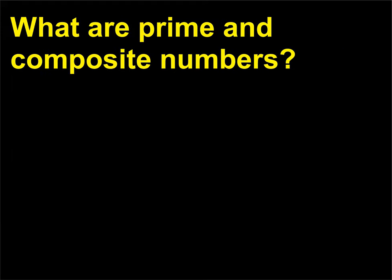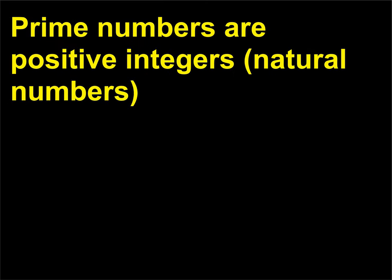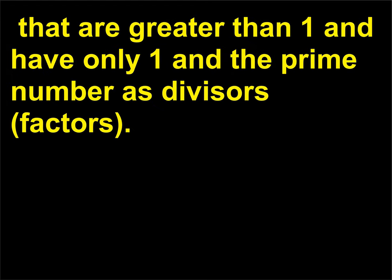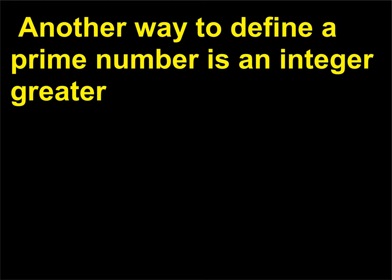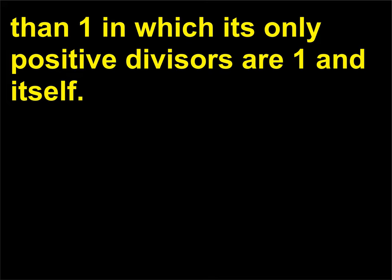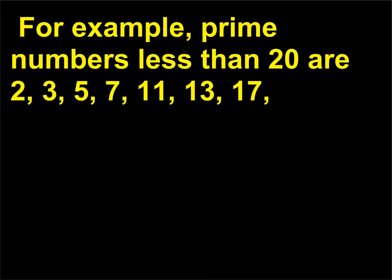What are prime and composite numbers? Prime numbers are positive integers, natural numbers, that are greater than 1 and have only 1 and the prime number as divisors or factors. Another way to define a prime number is an integer greater than 1 in which its only positive divisors are 1 and itself. For example, prime numbers less than 20 are 2, 3, 5, 7, 11, 13, 17, and 19.